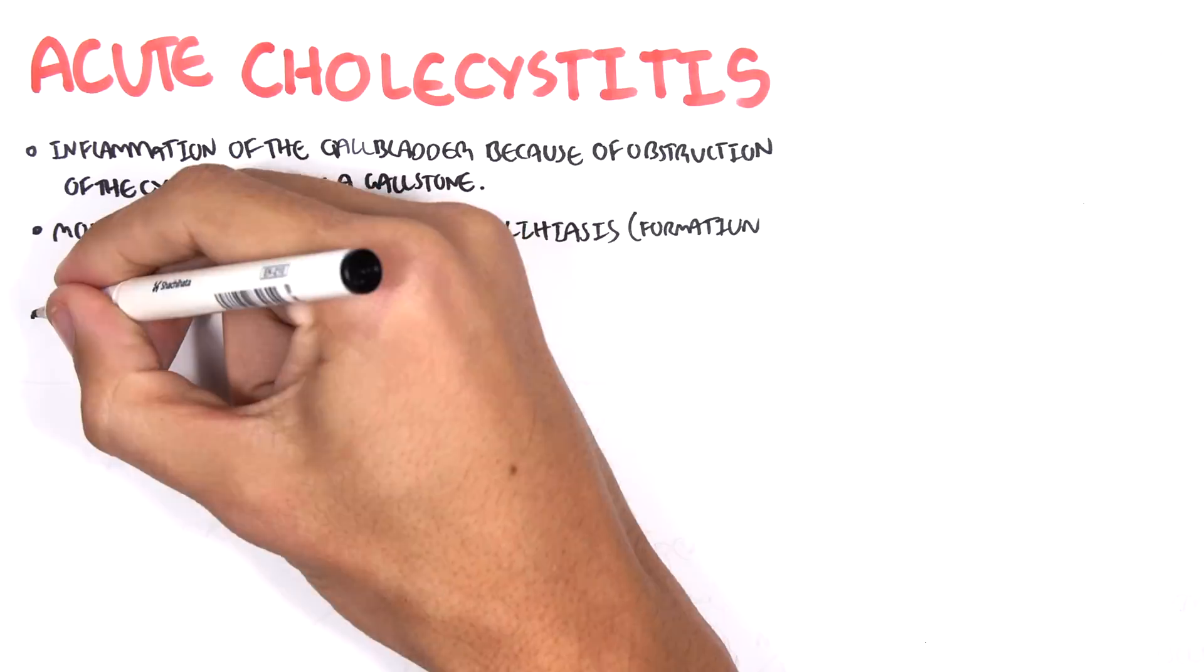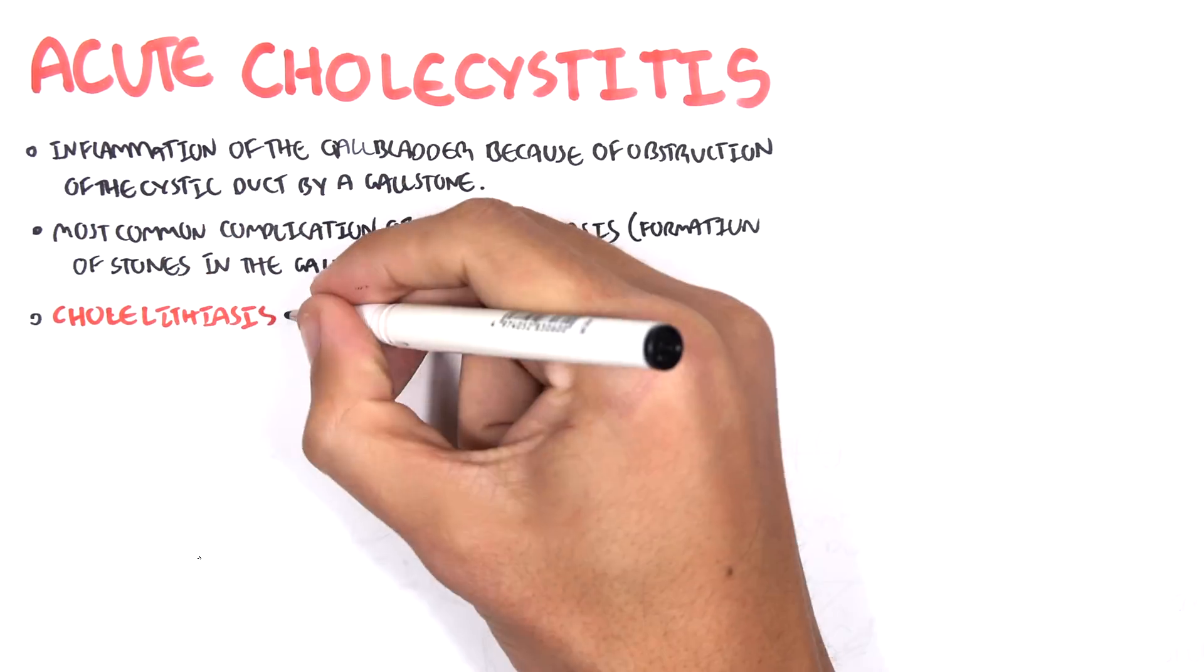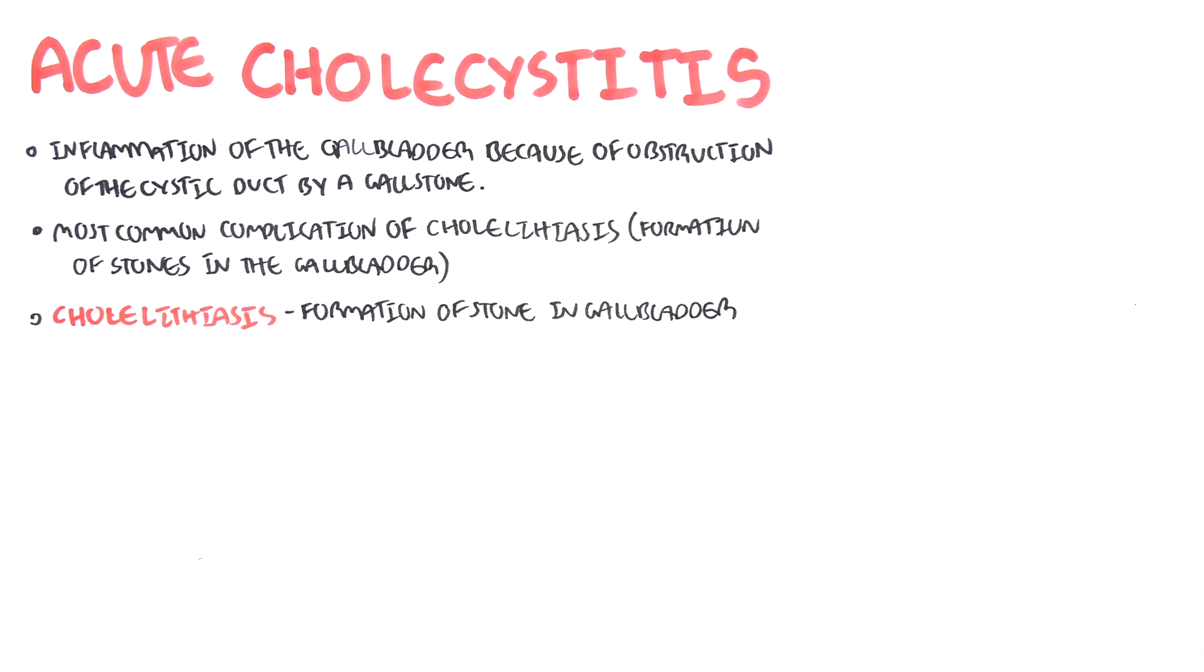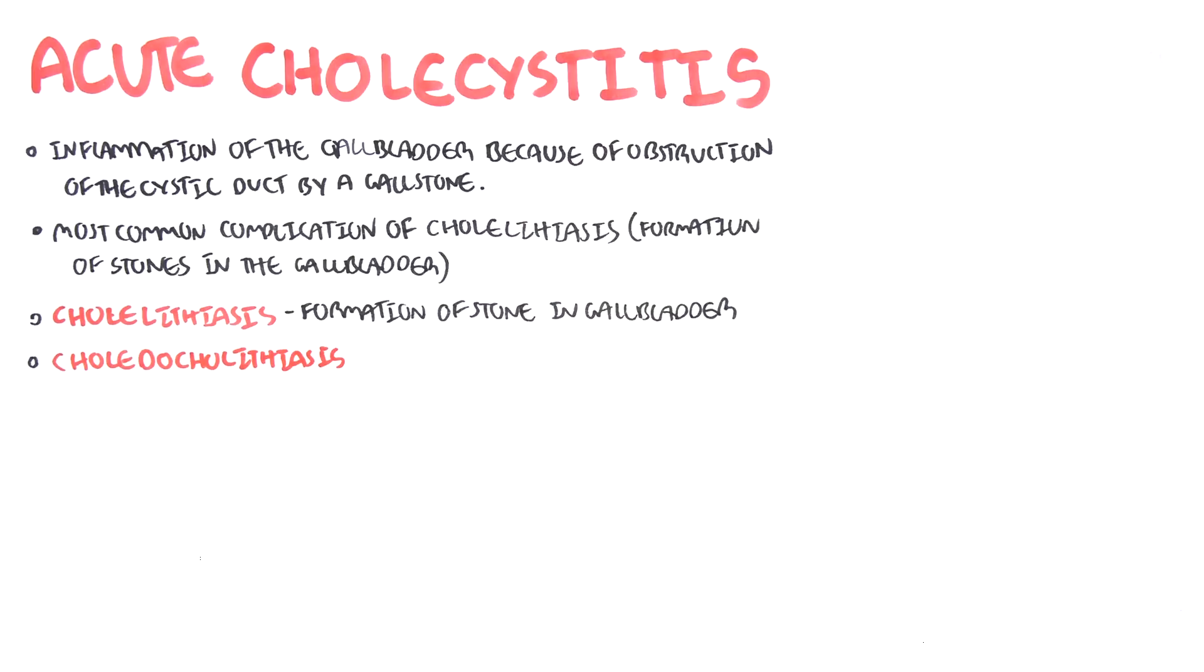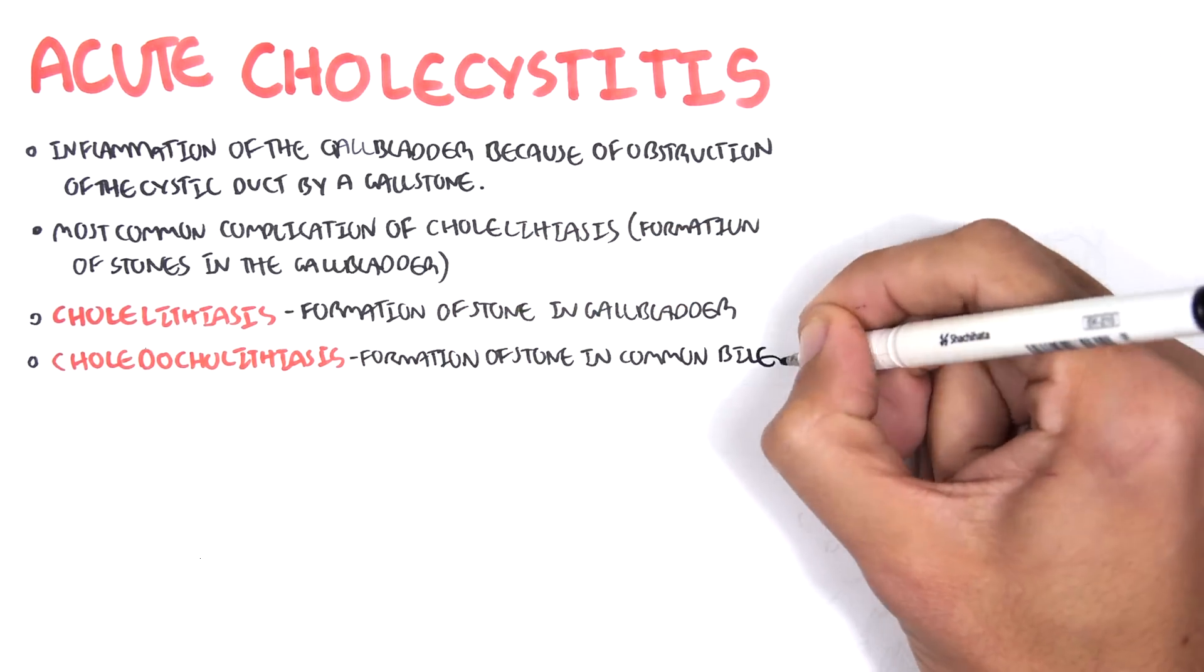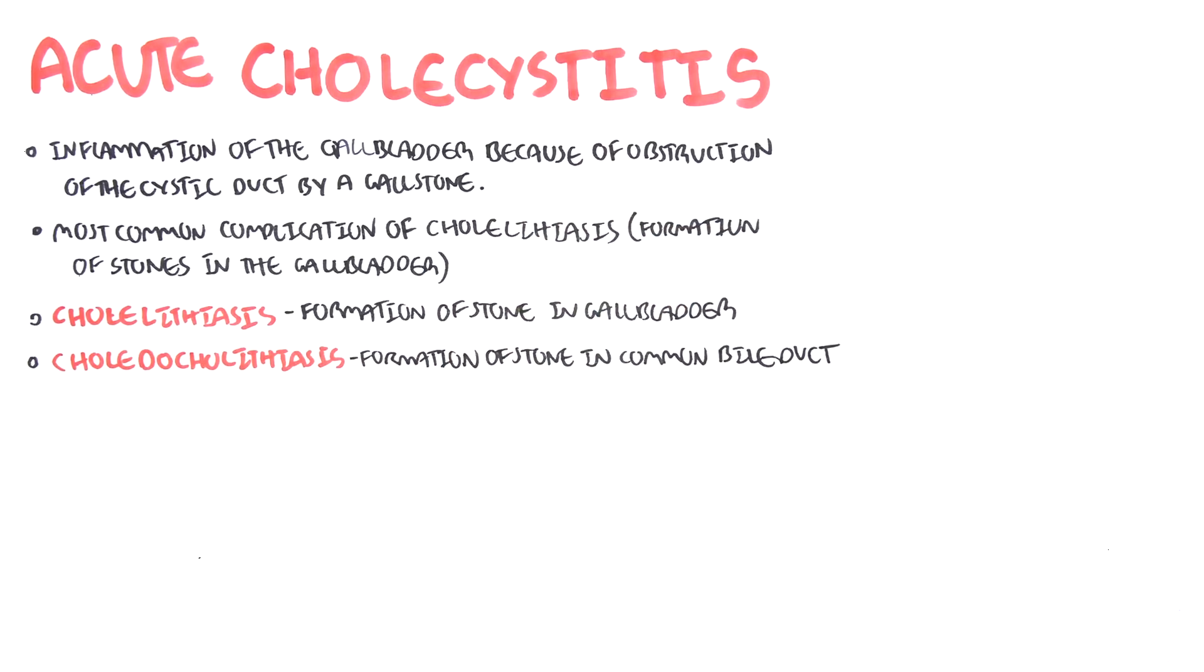Just to be clear, cholelithiasis is formation of stones in the gallbladder, which can lead to a few complications, one of which is acute cholecystitis. The other terminology, choledocholithiasis, is formation of stones, gallstones in the common bile duct, but we will not focus on that here.